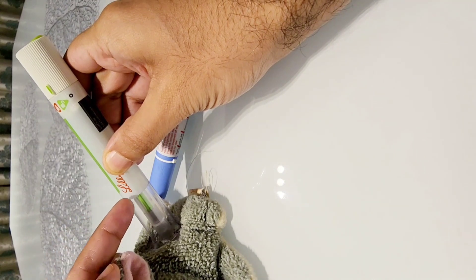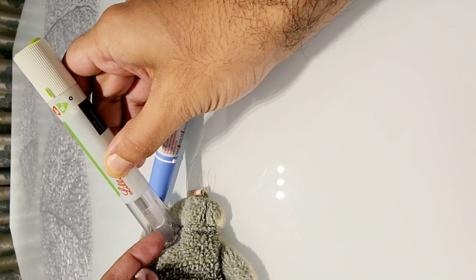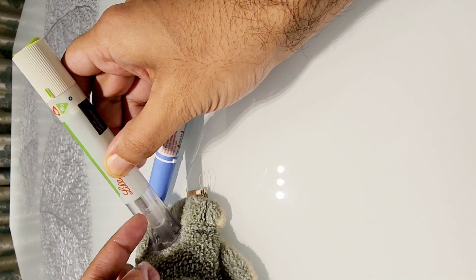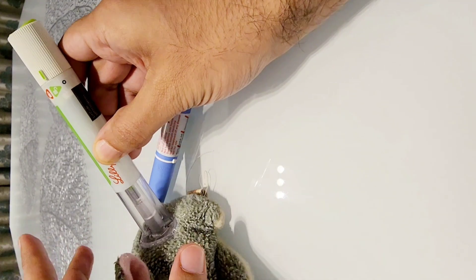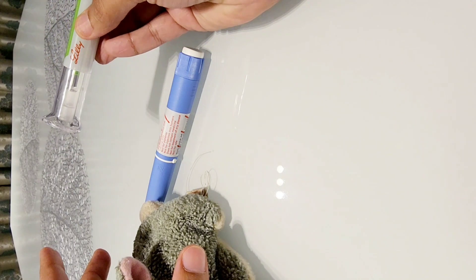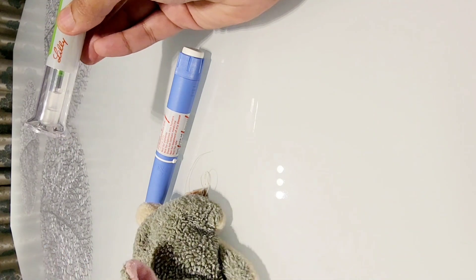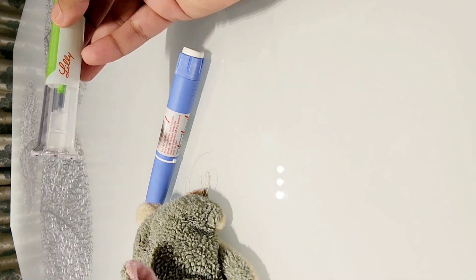So what you would see here is a piston coming down and it returns back. So you have two clicks. The first click means the needle went in. The second click means the needle is back out and you can just remove it and throw away the pen device. It means the full dose has been administered.